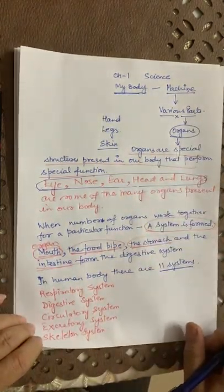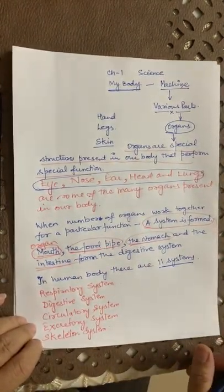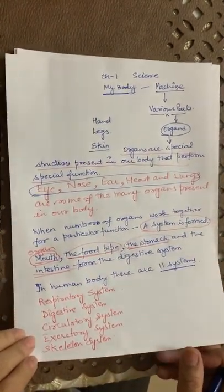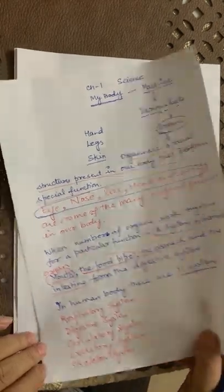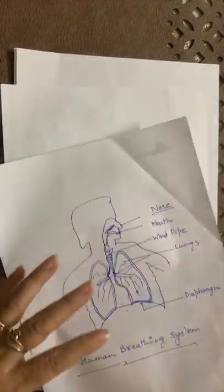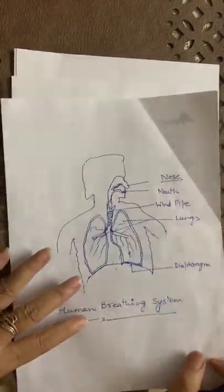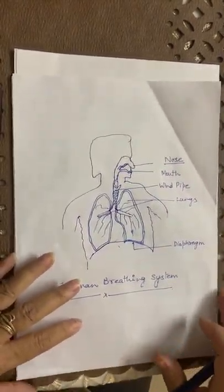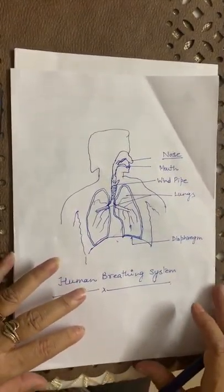Now I am going to explain the breathing system to you. The nose, the windpipe, and the lungs help us in breathing.